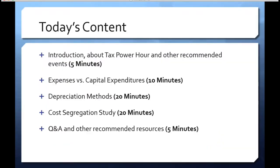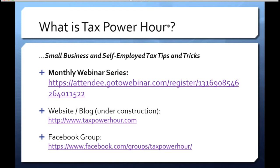Today's content: we'll spend about five minutes talking about what Tax Power Hour is. Then about 10 minutes differentiating between what's a deductible expense and what's a capital expenditure or fixed asset. Then we'll discuss depreciation methods, mostly tax-based. And then Heather, our guest speaker, will talk about cost segregation studies — a very important tax planning tool used to figure out the most optimal way to take depreciation on large asset purchases or construction. The last five minutes will be open to Q&A, so this will take approximately about an hour.